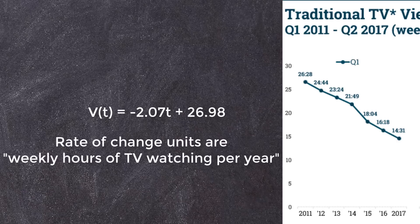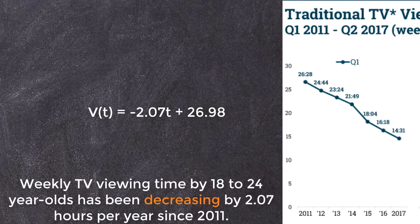So rise over run should be hours of TV watching per year. Throw the numerical value of the rate of change in front of that and we get our actual interpretation: during the first quarter of each year the amount of TV viewing time by 18 to 24 year olds has been decreasing, that's the negative part, by 2.07 hours per year. Way to go youth of America! I rescind my exuberant congratulations.